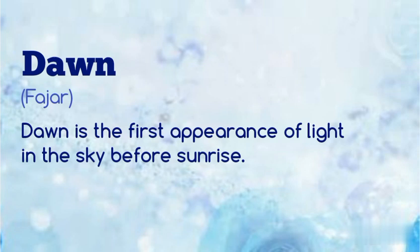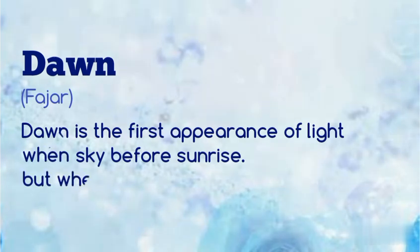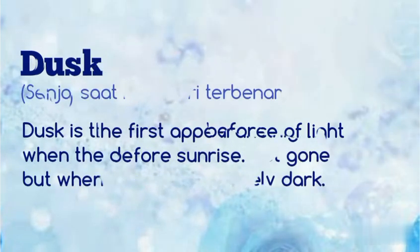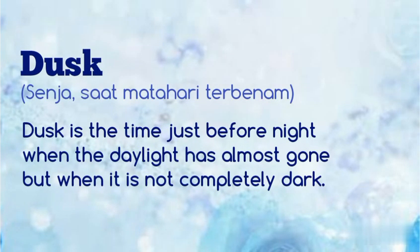Dawn is the first appearance of light in the sky before sunrise — dawn artinya fajar. Dusk is the time just before the night when the daylight has almost gone but when it is not completely dark.